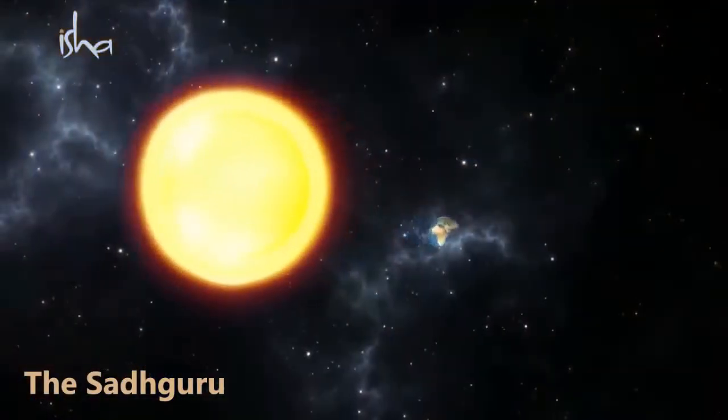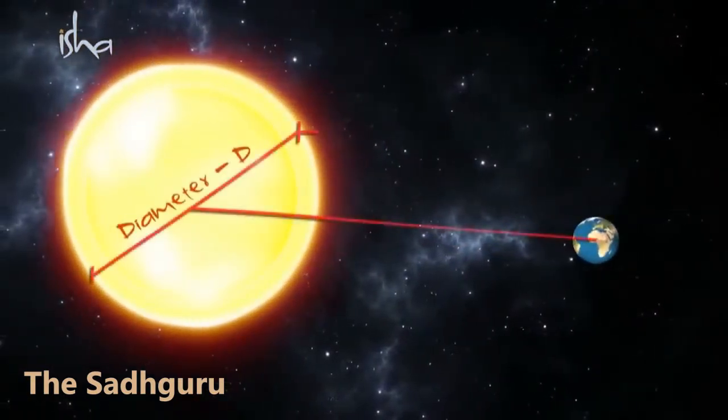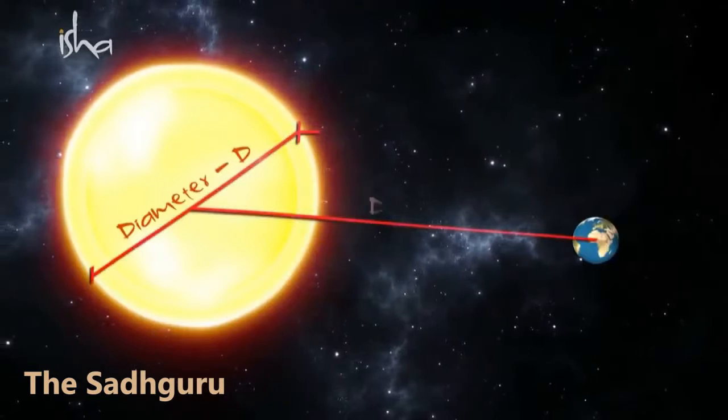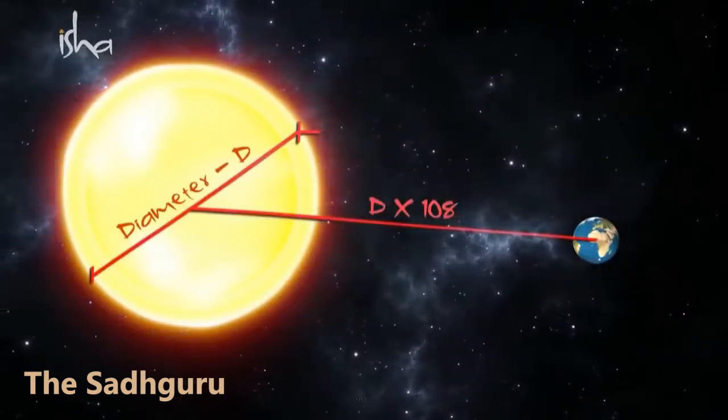The distances between the Sun and the planet, the distances between the moon and the planet, and the way we rotate and the impact it has — all these things have been looked at with great care. Right now, the diameter of the Sun multiplied by 108 equals the distance between the Sun and Earth.